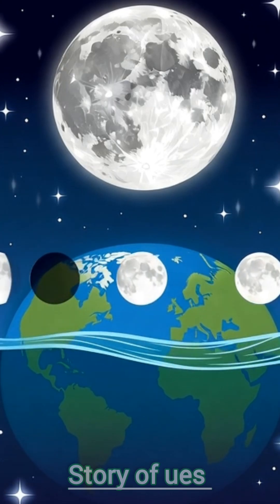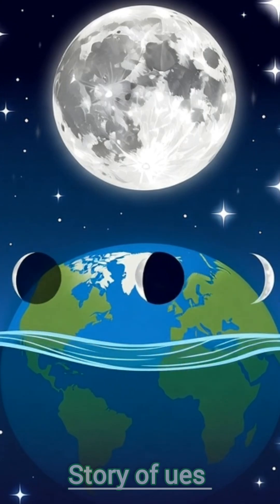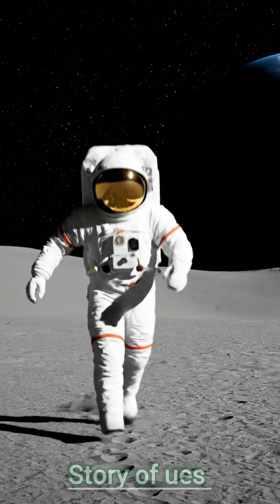The Moon has many craters, maria, and small mountains. Maria are nearly flat plains formed by ancient lava flows.